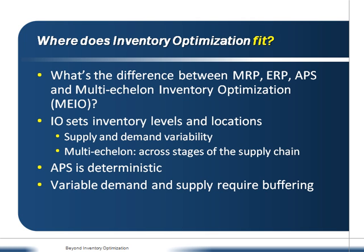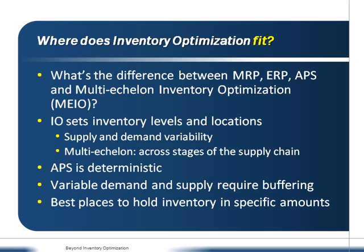Inventory optimization takes into account the different sources of variability you have, plus your lead times in the supply chain, plus the costs in the supply chain, to determine where the best places are to hold inventory in the right amounts to meet your final requirements to customers.